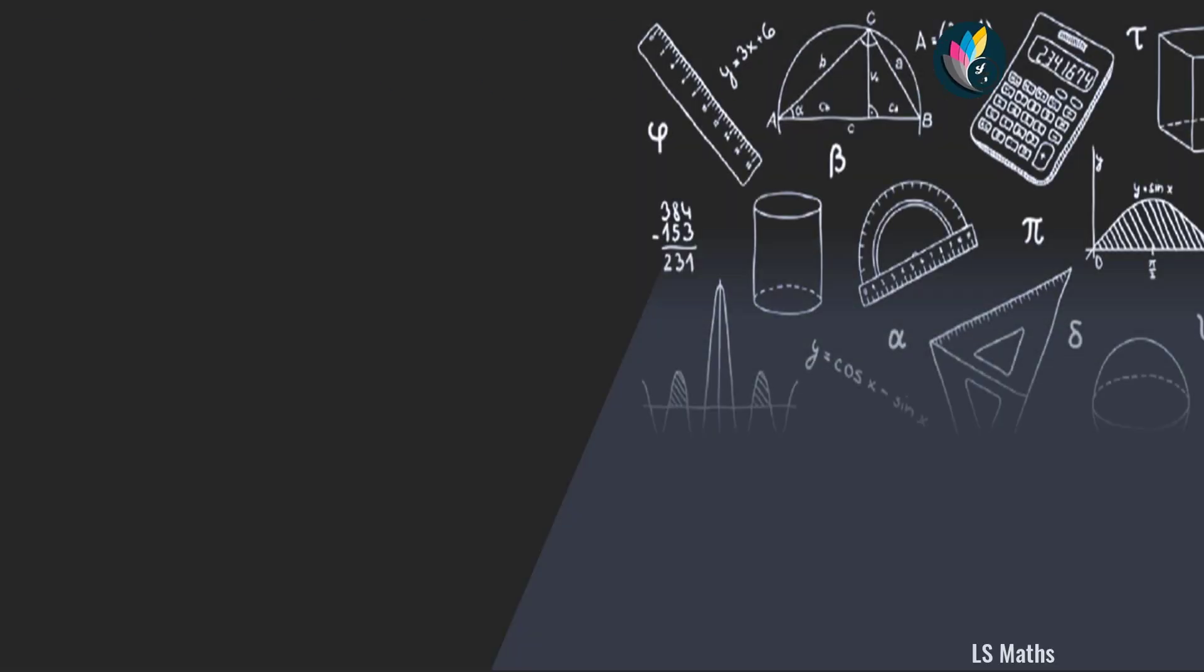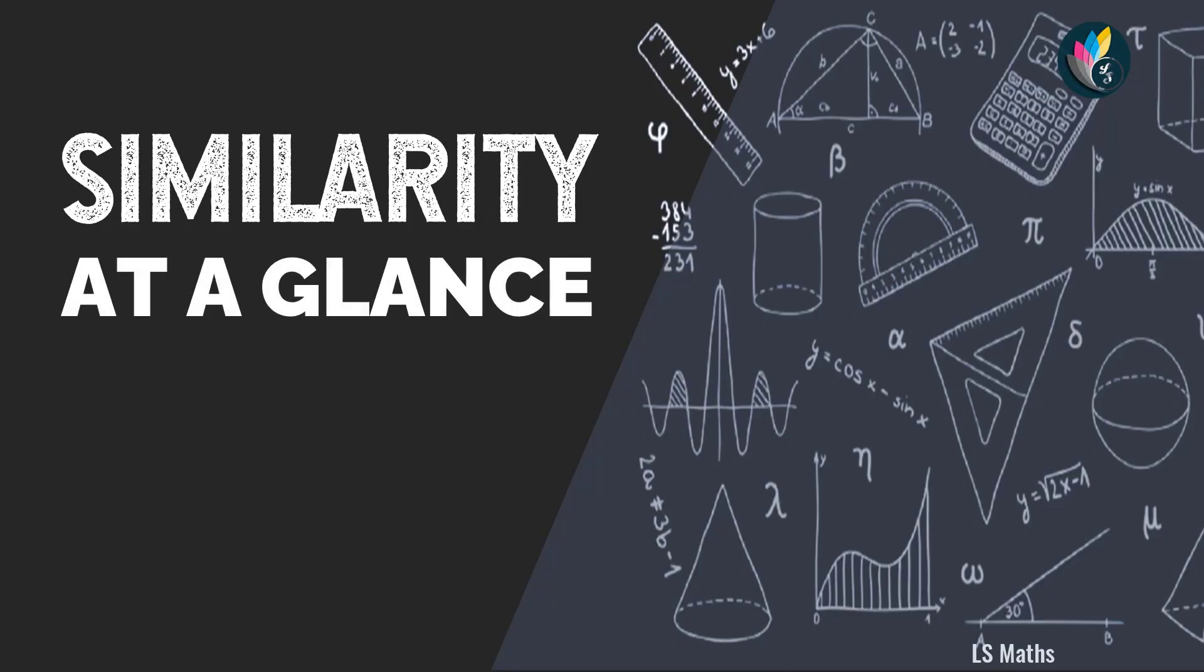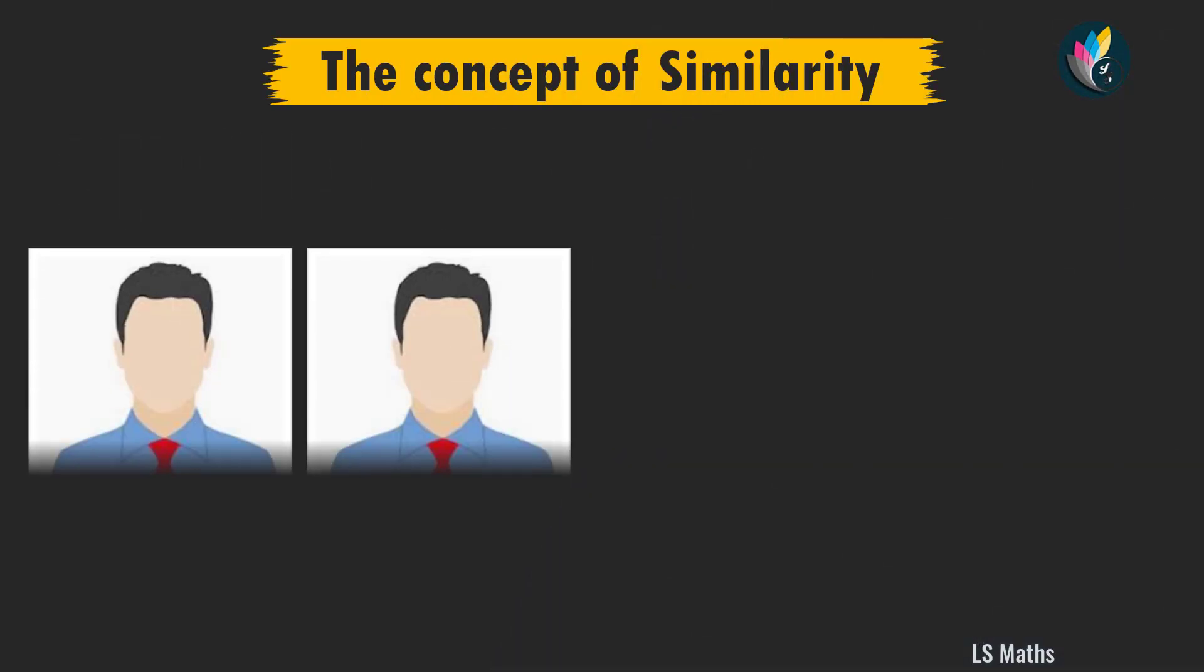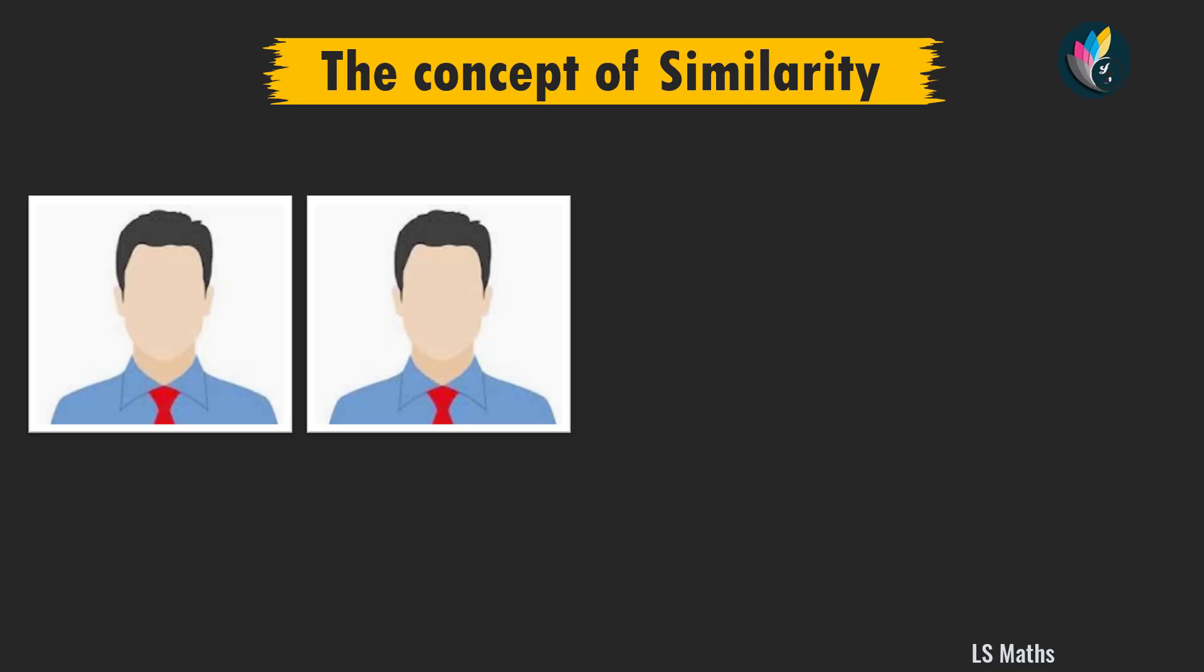Before getting into the construction procedure, let us have a brief look at the basic concept of similarity. Look at these two images. These two images are the passport size photos of a man. We can see they are one and the same. If you measure the dimensions of the head, they will be equal. Such figures are called congruent figures.